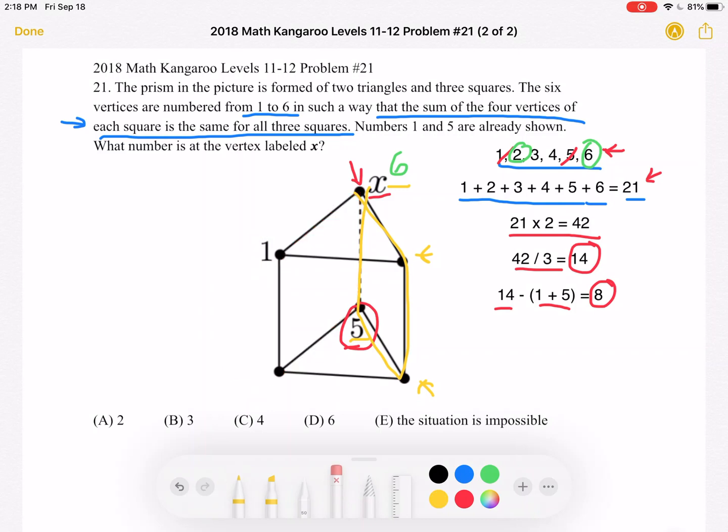So that means that x cannot be equal to 6. So that means that it must be equal to 2. And let's just show how that works. So if this is 2, this is 6. And then if we look over here, we have 2 and 5. That's 7. So 7 plus what is equal to 14? That's 7. So we can have 3 and 4. And these 2 can be switched. But that's not what we're trying to find. We're just trying to find that x is equal to 2.